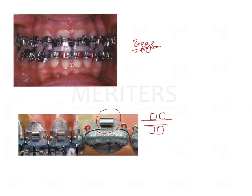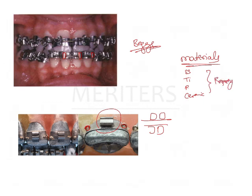Another type of question can be based on materials. Brackets are made of different types of materials: stainless steel, nickel-free, titanium brackets, polycarbonate, or ceramic brackets. Properties of these materials can also be important — for example, a previous exam asked about the critical surface tension of these materials. Materials is also an important topic to study for such questions.